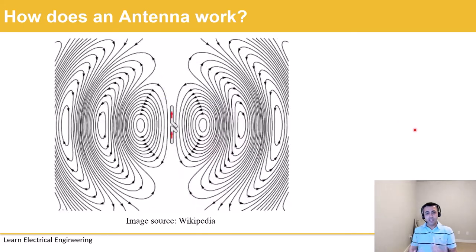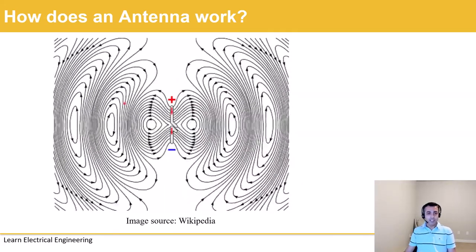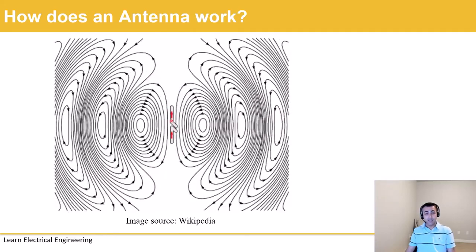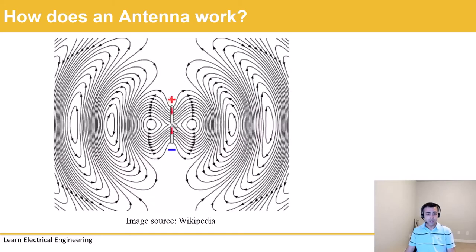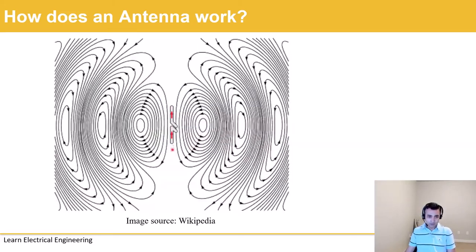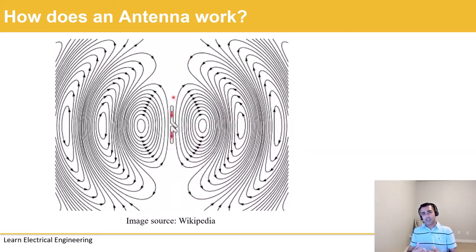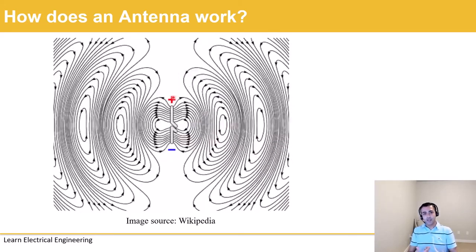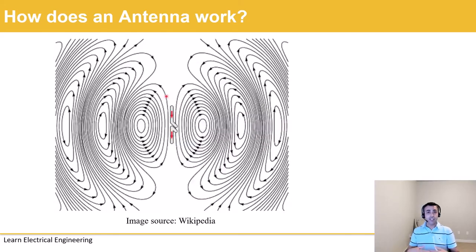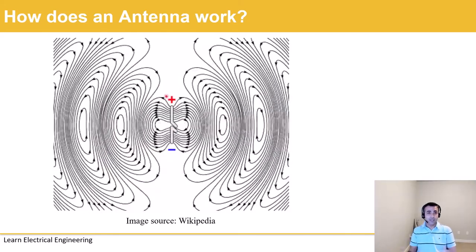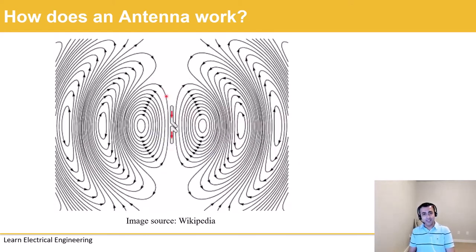Wikipedia has a nice animation of a dipole antenna demonstrating electric charges changing their location across time. As you can see in this animation, the positive charge moves back and forth. So when those charges start moving across time, electromagnetic waves get generated and they start radiating into the free space, which we will study in the next few slides.